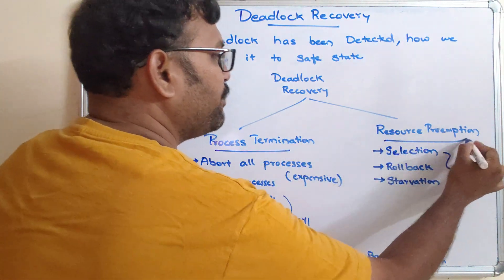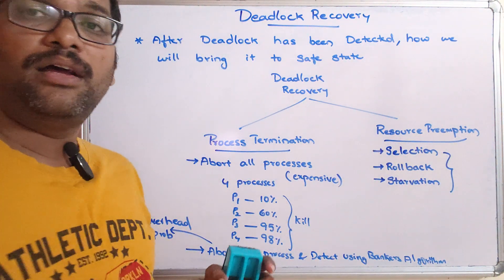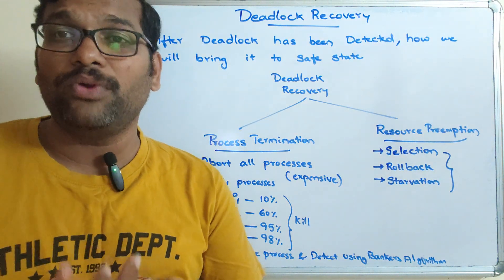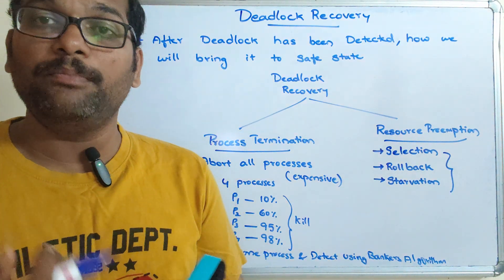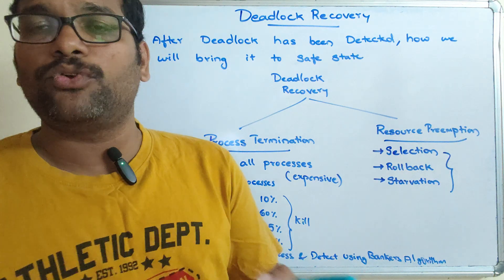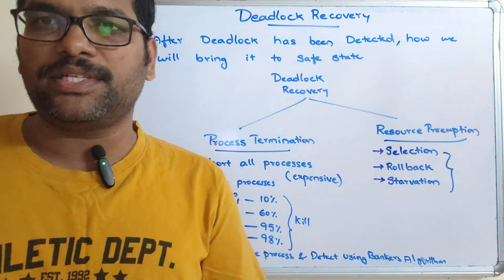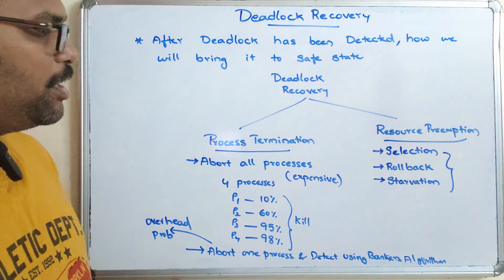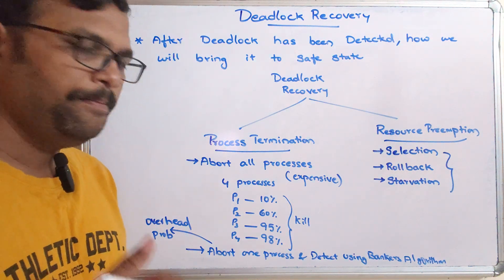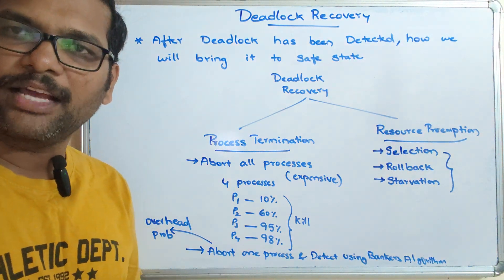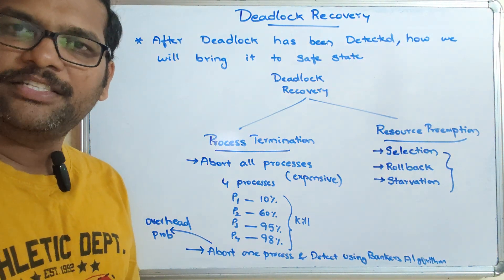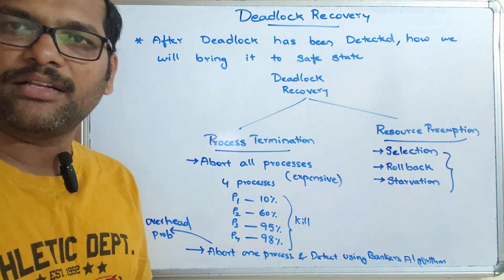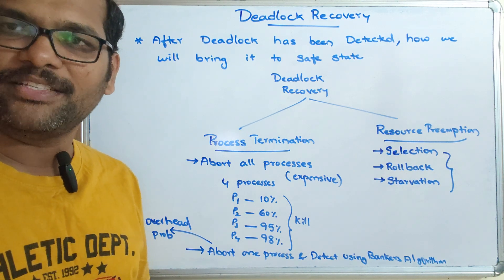So these are the two different ways we can recover from deadlock — how we can avoid deadlock and bring the system from an unsafe state to a safe state. Hope you understood. If you enjoyed the session, please like, share with your friends, and don't forget to subscribe to our channel. Thanks for watching, thank you very much.